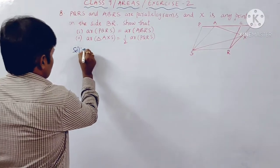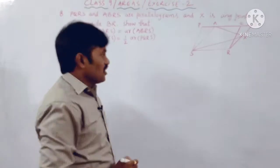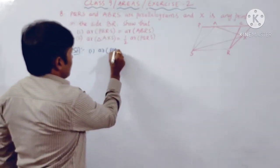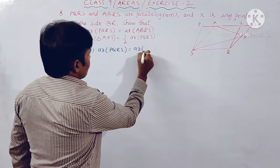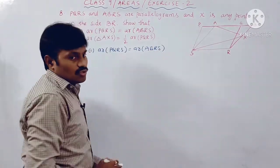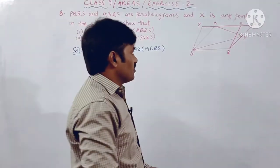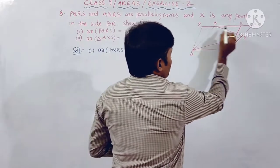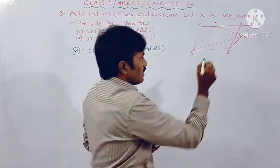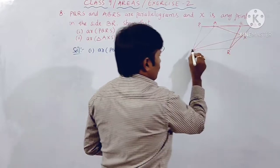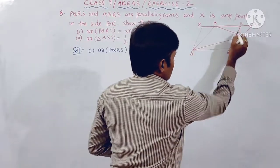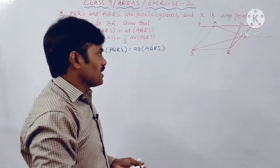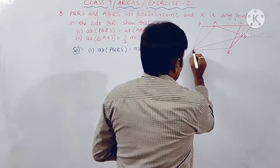For the first part, we have to show that area of PQRS is equal to area of ABRS. If we observe, parallelogram PQRS and parallelogram ABRS are on the same base SR.